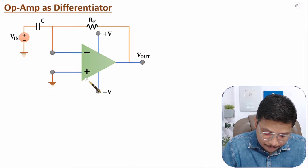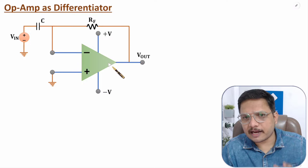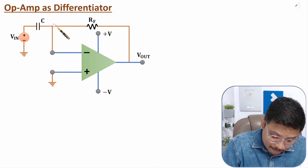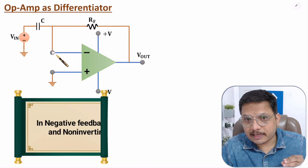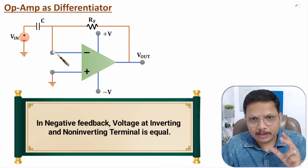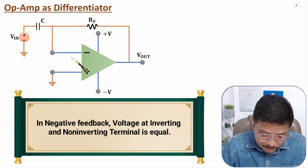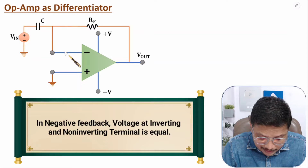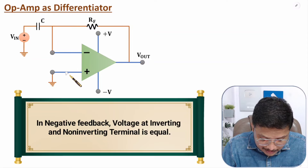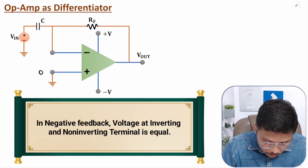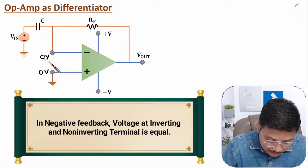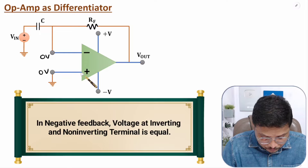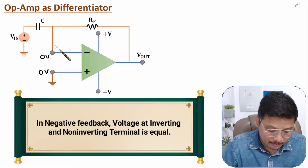Now I am going to explain you operational amplifier as a differentiator. Here we have an op-amp. First of all, you need to understand a few basics regarding op-amp. We have negative feedback over here, so we need to apply the virtual short concept, or virtual ground concept. In negative feedback, potential at the non-inverting and inverting terminal will be the same. The positive terminal is connected to ground, meaning zero voltage, so the same zero voltage will be at the inverting terminal as well.